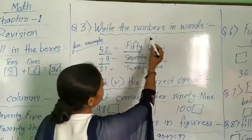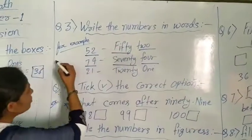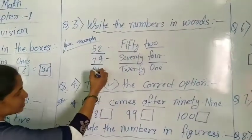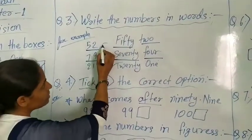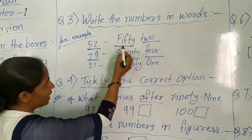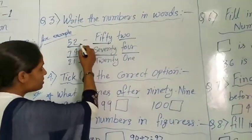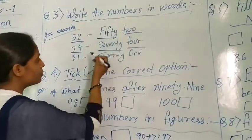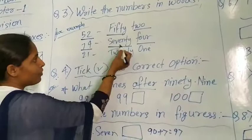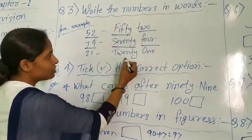Next question. Write the numbers in words. For example, here are some numbers and write the numbers name. 52, these numbers spelling is fifty-two. 74, seventy-four. 21, twenty-one.